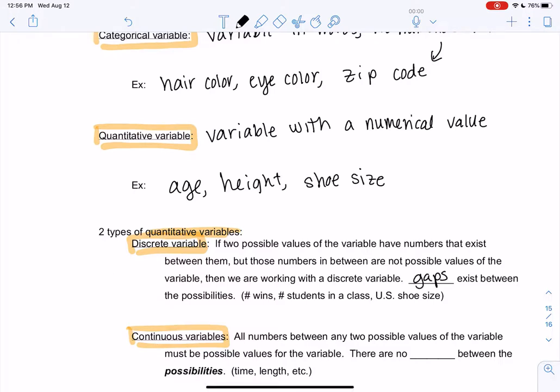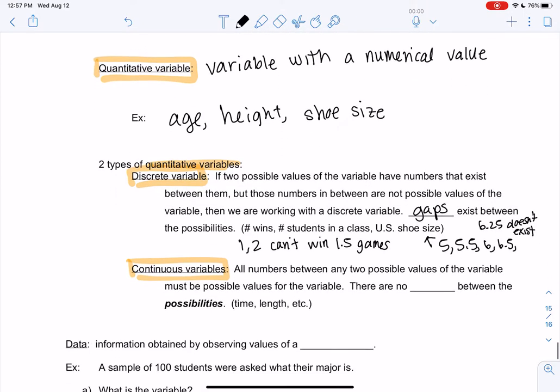So if we look at the number of wins, you can win one game or two games, but you can't win one and a half games. So that's what my gap is. Students in a class - I can have one student, I can have two students, I can't have three and a half students. Shoe size - shoes are 5, 5.5, 6, 6.5, and so on, but 6.25 doesn't exist. So basically, there are numbers that exist but don't work. So 6.25 is a number, but it's not a shoe size. So that's what I mean by gaps.